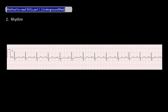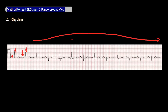Now let's focus on rhythm. You should be able to identify sinus, which is what we call a normal rhythm, or not sinus. Just like with rate, use the rhythm strip to look at rhythm. To be sinus rhythm, each P wave should be followed by a single QRS complex. Notice P wave followed by a QRS, another P wave followed by a QRS. You continue to see each P wave followed by a single QRS, giving us a sinus rhythm.